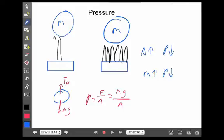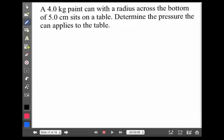So, let's look at an example of this. A four kilogram paint can with a radius across the bottom of five centimeters sits on a table. Determine the pressure it can apply to the table.